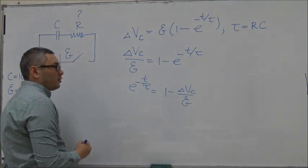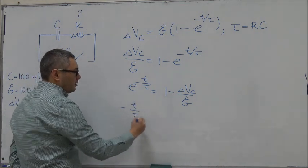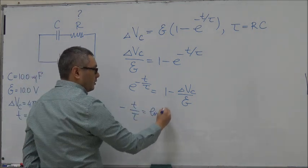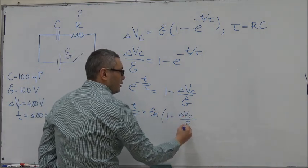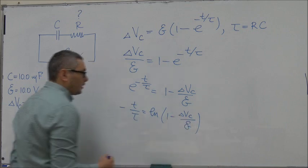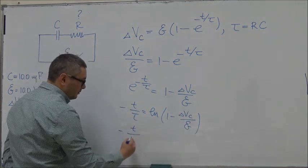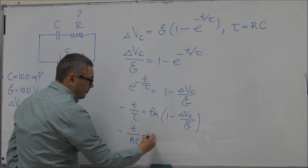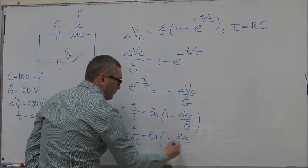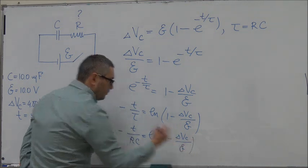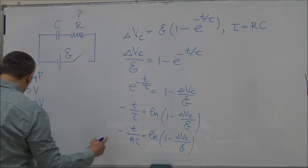If we take the logarithm of both sides, then on this side we get -t/τ = ln(1 - ΔVc/ε). And tau is equal to RC.